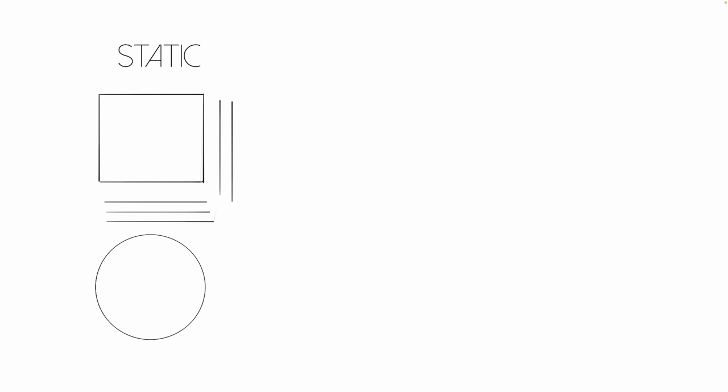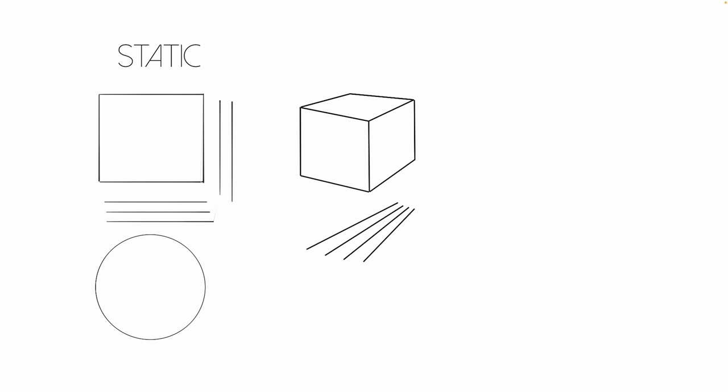A while back I was watching a video about character design and figure drawing and the concept came up about static versus dynamic shapes. Static shapes are things like perfect squares, perfect circles, lines that are parallel to one another — and these are not bad things. They are just a form of shapes. Once you add some perspective, there's a little bit more dynamicism because the lines aren't all perfectly together.